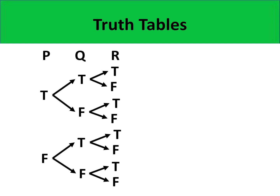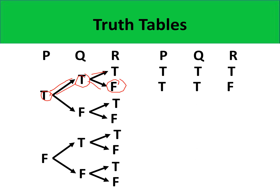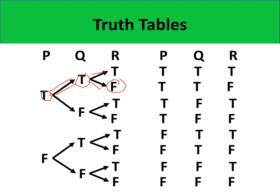Now to write down the truth values when we have three variables, we just follow the path from this tree diagram. For example, the first possibility would be all three variables are true. The second would be true, true, and then false. Completing the other possibilities, we get eight different combinations whenever we have three propositional variables.